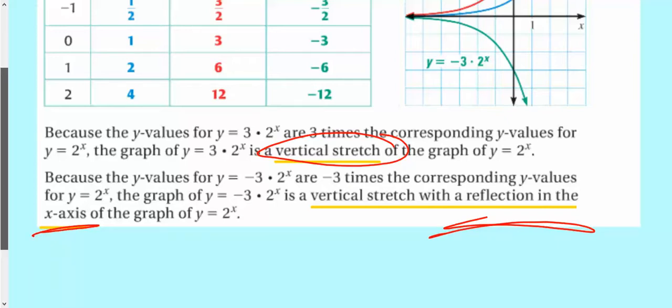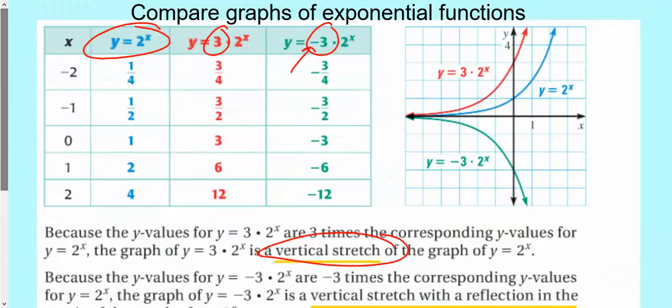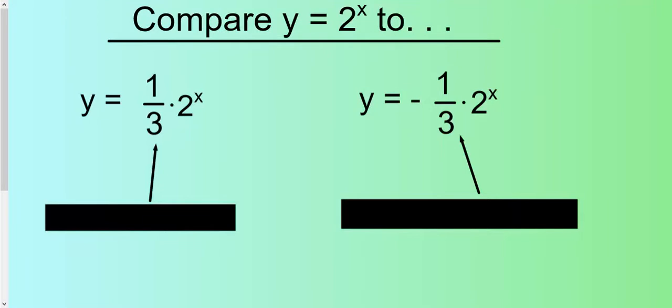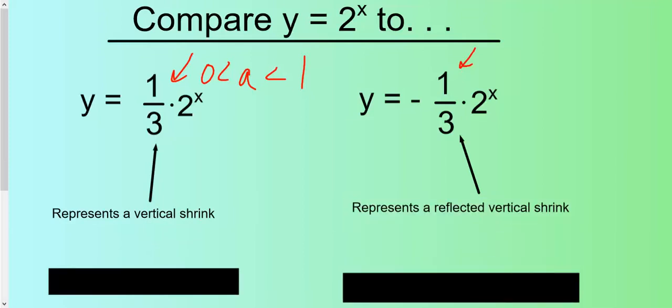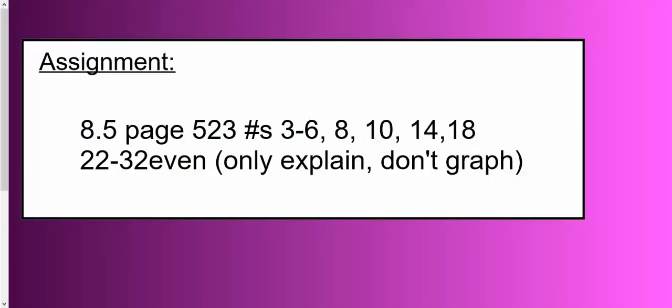Now you can also have vertical shrinks. To create a vertical shrink, we will talk about that with the decaying. Actually, we're going to talk about that right now. This is our vertical shrink right here. When the a value is between 0 and 1. And this is a reflection as well. So we have a vertical shrink of 1 third. And then we have a vertical shrink of 1 third as well as reflection. And so when it asks you to compare, that's what they're looking for.